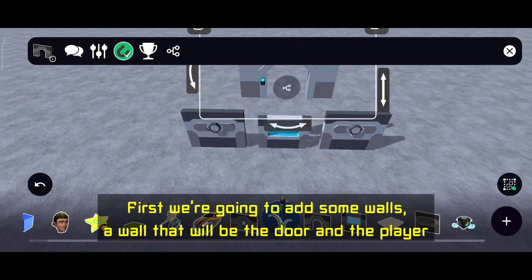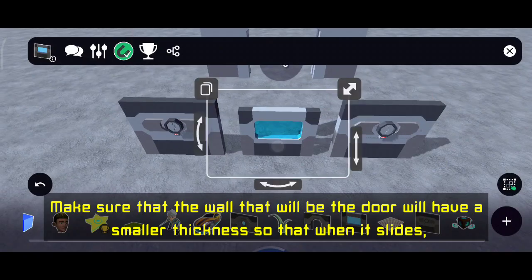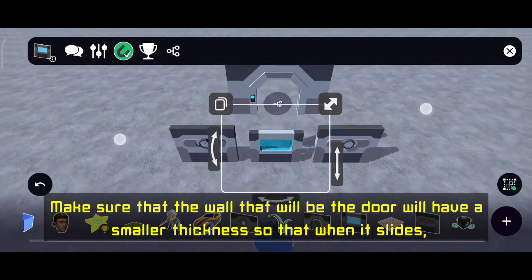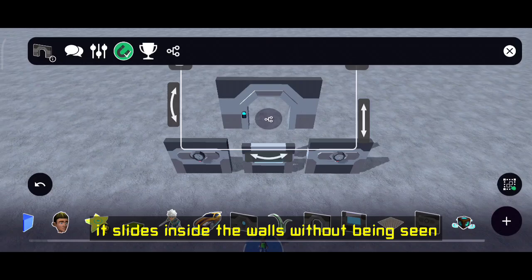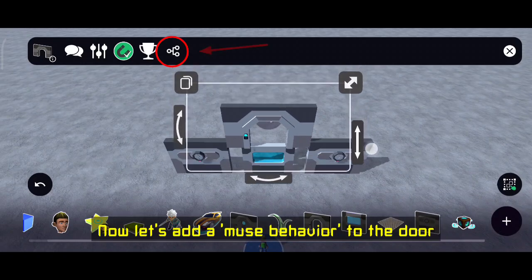Add a wall that will be the door and the player. Make sure that the wall that will be the door will have a smaller thickness so that when it slides, it slides inside the walls without being seen.